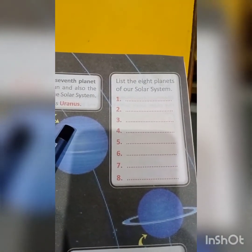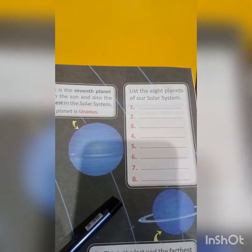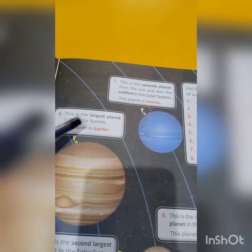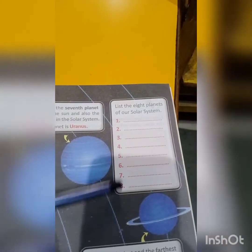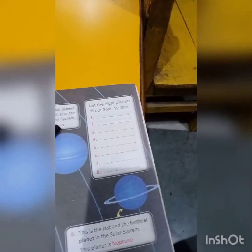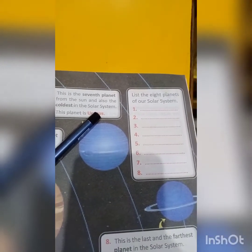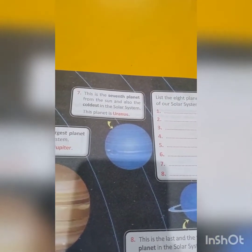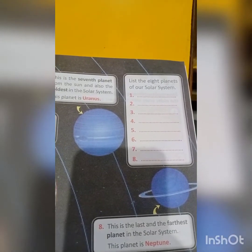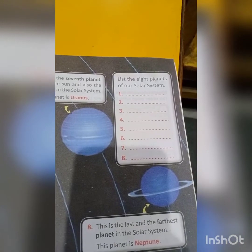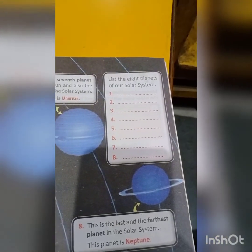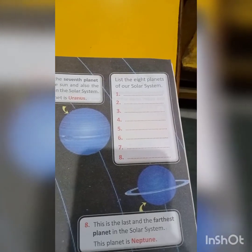Now, list the eight planets of our solar system. From number one to four the planet names are given, and from five to eight the names are also given. You just have to write down the names of the planets in order. This is your homework — you can do it later. The answers are on page 28 and 29. There are only eight planets and you have to write their names. I hope you all can do this on your own. Thank you so much, children.